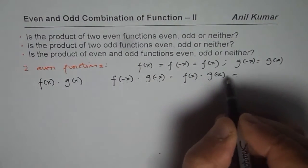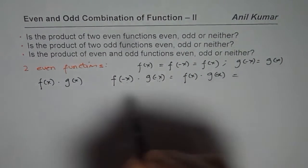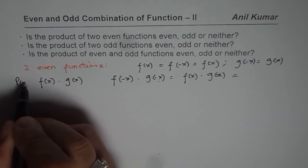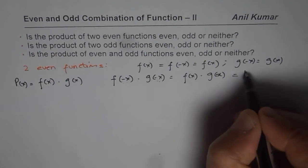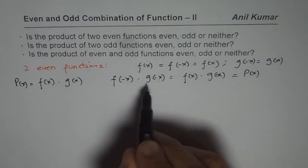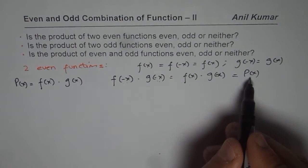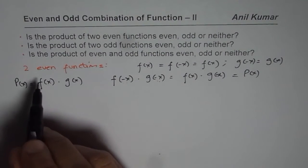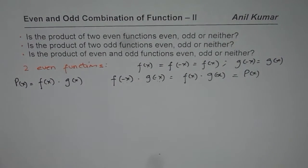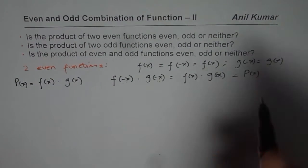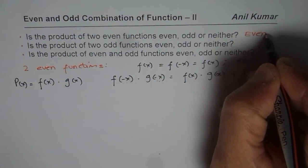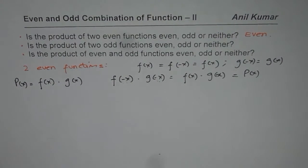Now if I have the product of these two functions — that is, f of x times g of x — then we have to consider what is f of minus x times g of minus x. Since both are even functions, f of minus x equals f of x and g of minus x equals g of x. Therefore we get the original product function. Since we get the same product function, we say that the product of two even functions is even.